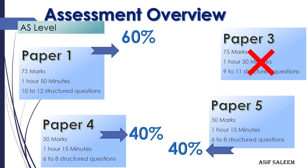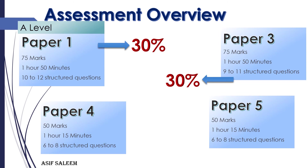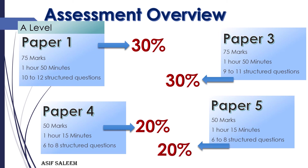For A-Level Mathematics — whether you took the AS route or did all four papers together — the 100% is distributed across four papers: Paper 1 carries 30%, Paper 3 carries 30%, Paper 4 carries 20%, and Paper 5 carries 20%, totaling 100%.